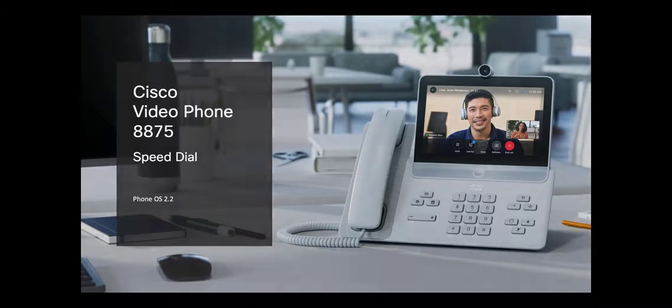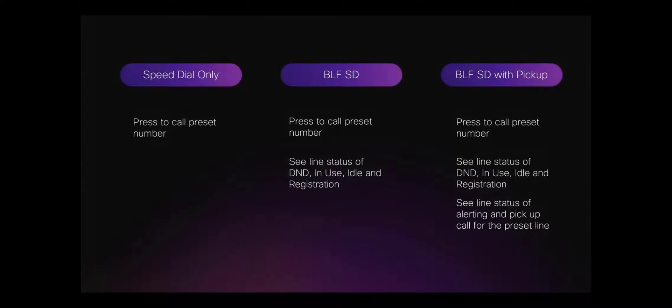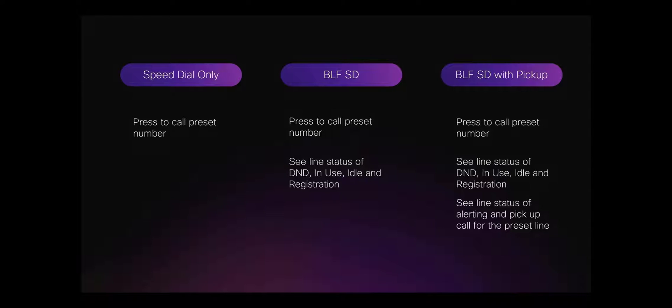This video is about speed dials on the 8875. There are three types of speed dials: basic ones, speed dial with busy lamp field, and speed dial with pickup.